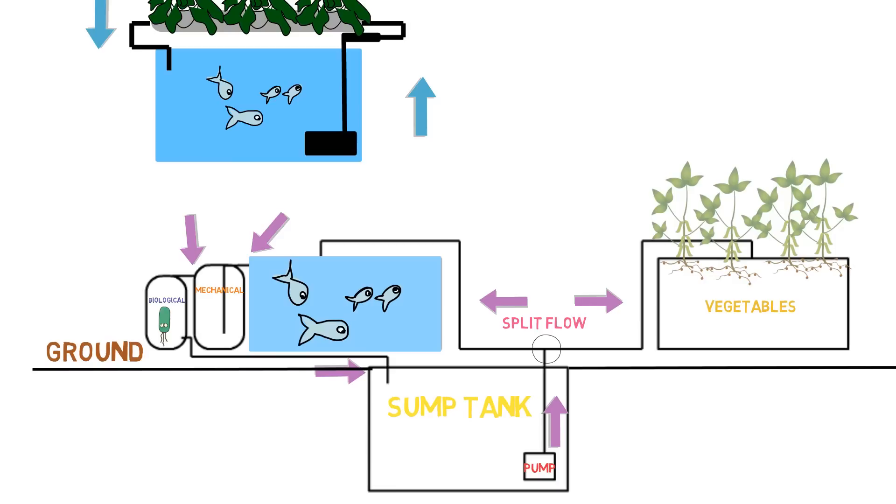This is the blueprint for the advanced systems. Now there's different variations that you can make out of this blueprint. It doesn't have to be just the vegetables on the right side and the fish on the left side. You can do all types of variations and mix it up.